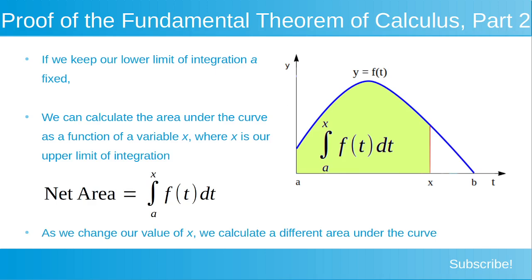As we change our value of x, we calculate a different area under the curve. If we were to reduce that value of x to some lower value, we can calculate that net area, shaded in green, as being equal to the integral from a to that value of x of f dt. And if we use a larger value of x, we can calculate this net area, shaded in green, as the integral from a to that larger value of x of f dt.